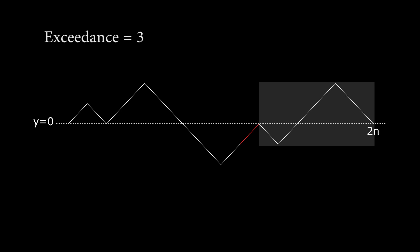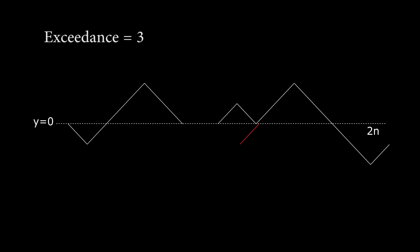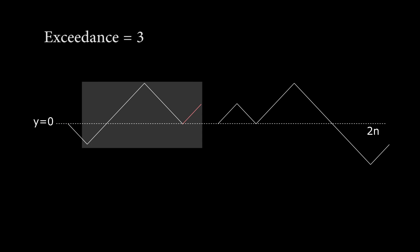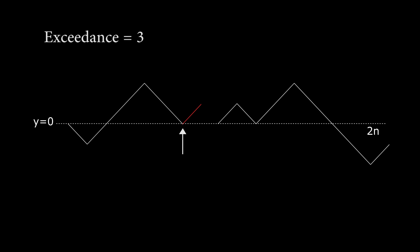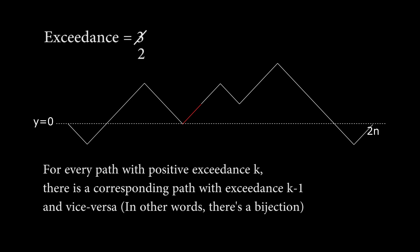We now have a new path with exceedance k minus 1. Wait, hold on, why did that work? The right segment starts and ends on y equals zero, and moving it to the start of the path won't change that. So the right segment will have no effect on the exceedance. The left segment starts on y equals zero originally. Once we swap the right and left segment, the original right half will end at y equals zero. But then, since x is an up step, the original left half will be starting one higher than it was originally. So since it was shifted up by one, it will have one fewer down steps below y equals zero, therefore decreasing its exceedance by one. And since this process is easily reversed, we know that each path with positive exceedance k has a corresponding path with exceedance k minus 1 and vice versa, creating a bijection.